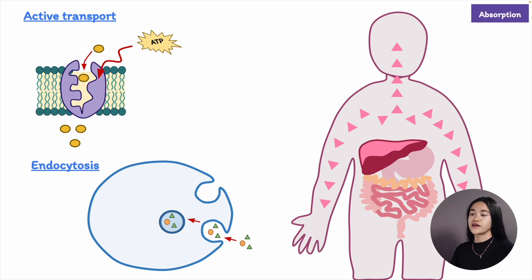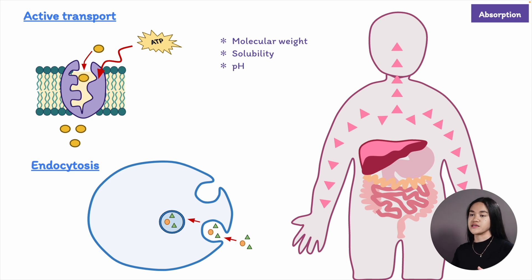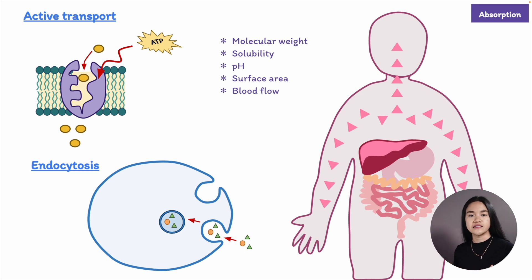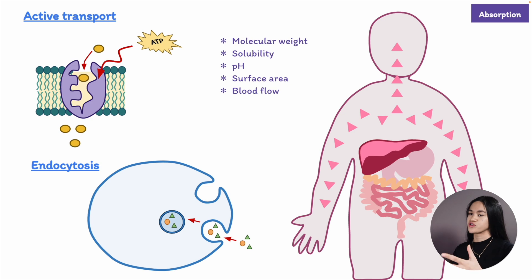There are also drug-related factors that influence the rate of absorption, such as molecular weight, solubility, formulation, the pH of the environment, surface area, and blood flow to the absorption site. Small, non-ionized, and lipid-soluble drugs can easily pass through the plasma membrane, whereas water-soluble and polar drugs cannot easily pass through the membrane.